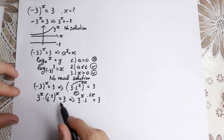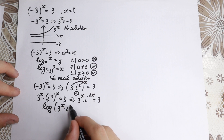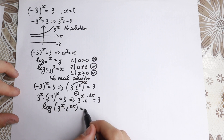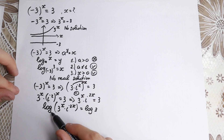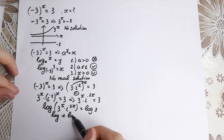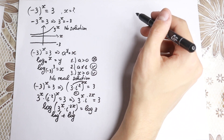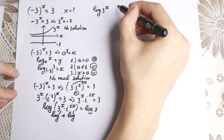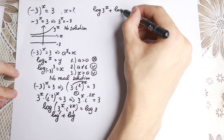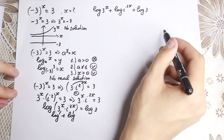Let's take log on both sides. So log of (3 to the x times i to the power 2x) equals log 3. Using the log property that the log of a product equals the sum of the logs, we can write: log(3 to the x) plus log(i to the power 2x) equals log 3.